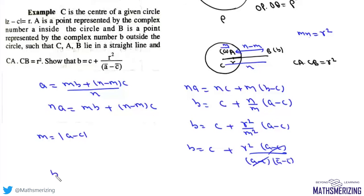Now canceling (a - c), we can write b = c + r²/(ā - c̄), and this is what we need to prove.